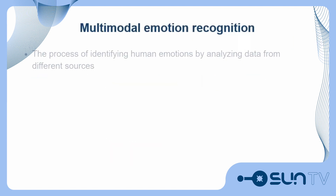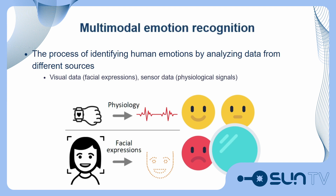Emotion recognition is the process of identifying and distinguishing human emotions by analyzing data derived from different types of sources, like physiological signals and facial expressions. Understanding emotions is important in extended reality applications, offering information about users' experience in both physical and mental rehabilitation scenarios. Information about the emotional state of the patient can be pivotal for enhancing engagement and personalizing treatment, and detecting possible discomforts or fatigue.